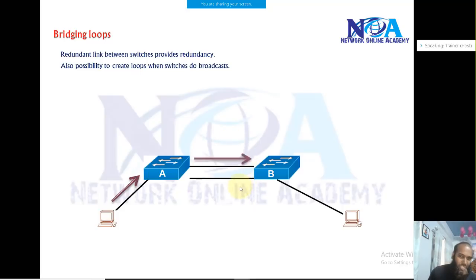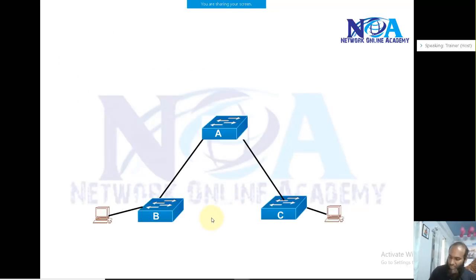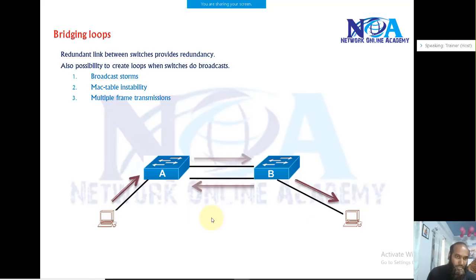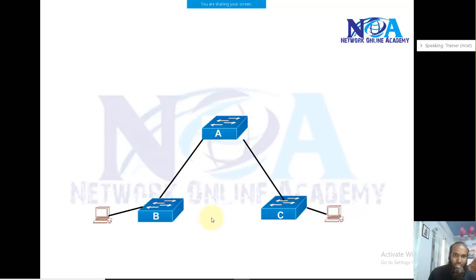This is one typical issue with multiple links between the switches which will increase the number of broadcast storms—continuous broadcast. This broadcast will not stop unless you simply remove the extra cable or power off the switch, or your network is down. It will also lead to MAC table instability because of the continuous broadcast. It will keep on updating the MAC table so your MAC table is not going to be stable. You may end up receiving multiple frame transmissions from multiple ports. So there's a good thing as well as the bad thing: the good thing is redundancy, and the bad thing is creating loops. So there must be something to fix these things.